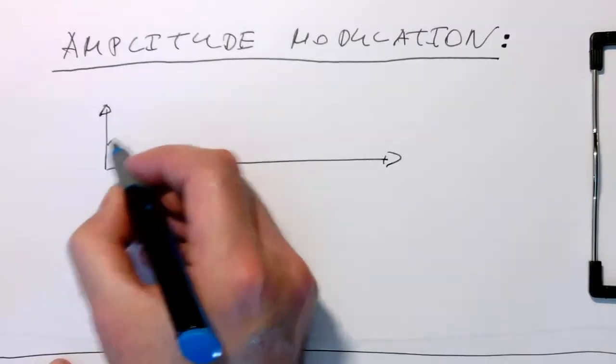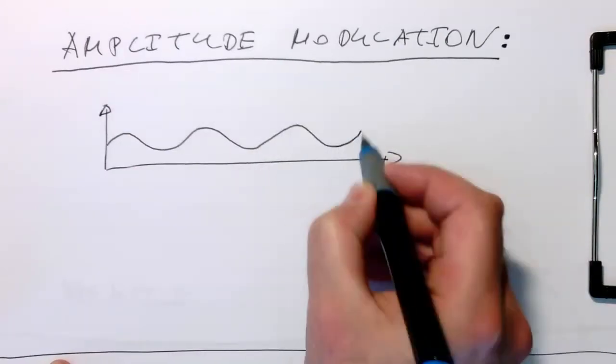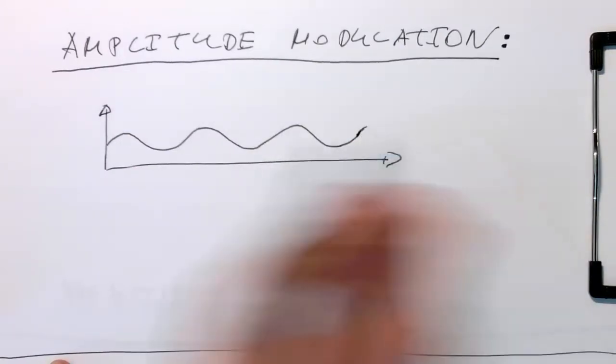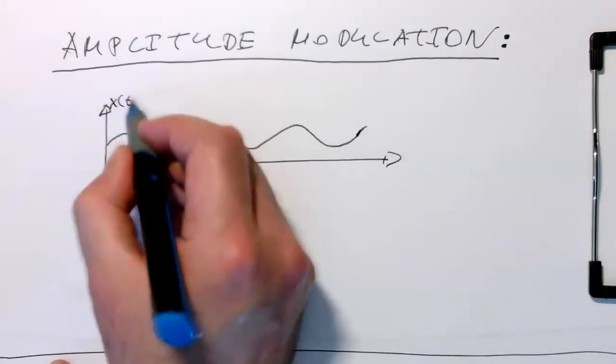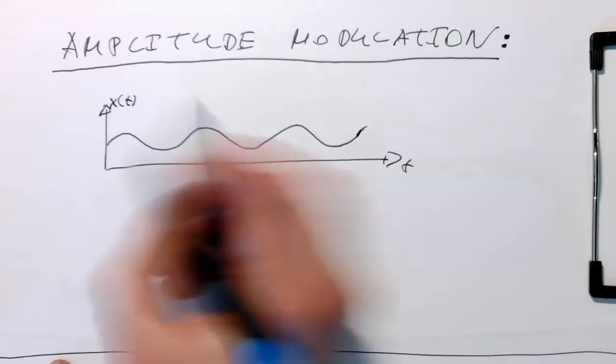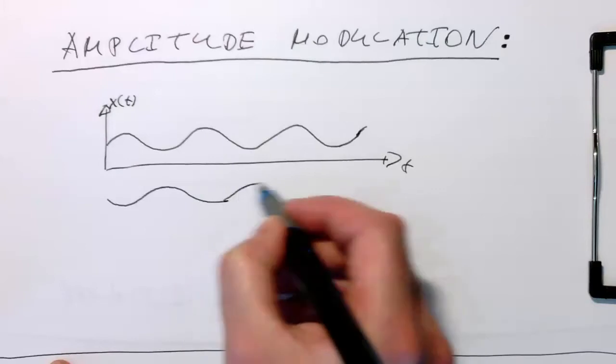So let's say we would like to transmit this information here, just a sine wave, which obviously in Digicom is probably not happening like this, but just for instructional purposes. So here that's our signal. And then I just draw the same wave upside down underneath here.